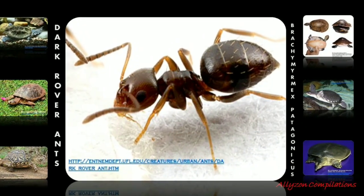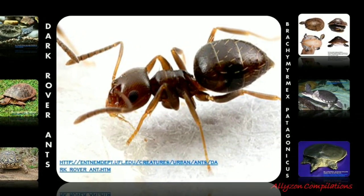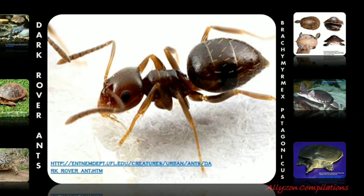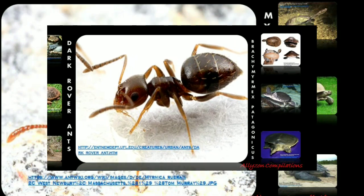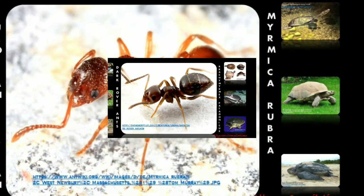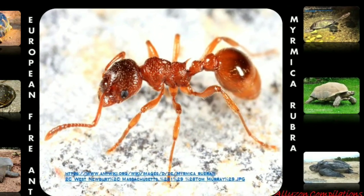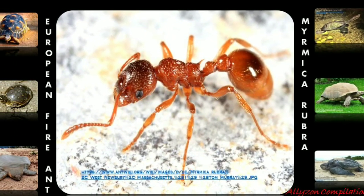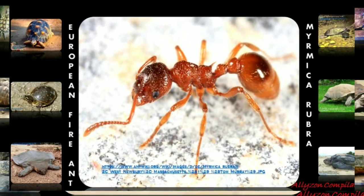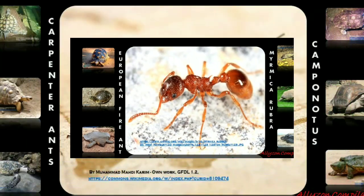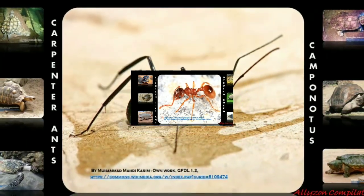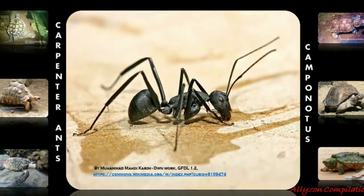Research conducted by James and Cottle into sleep patterns of insects in 1983 showed that ants have a cyclical pattern of resting periods which each nest as a group observes, lasting around 8 minutes in any 12-hour period.